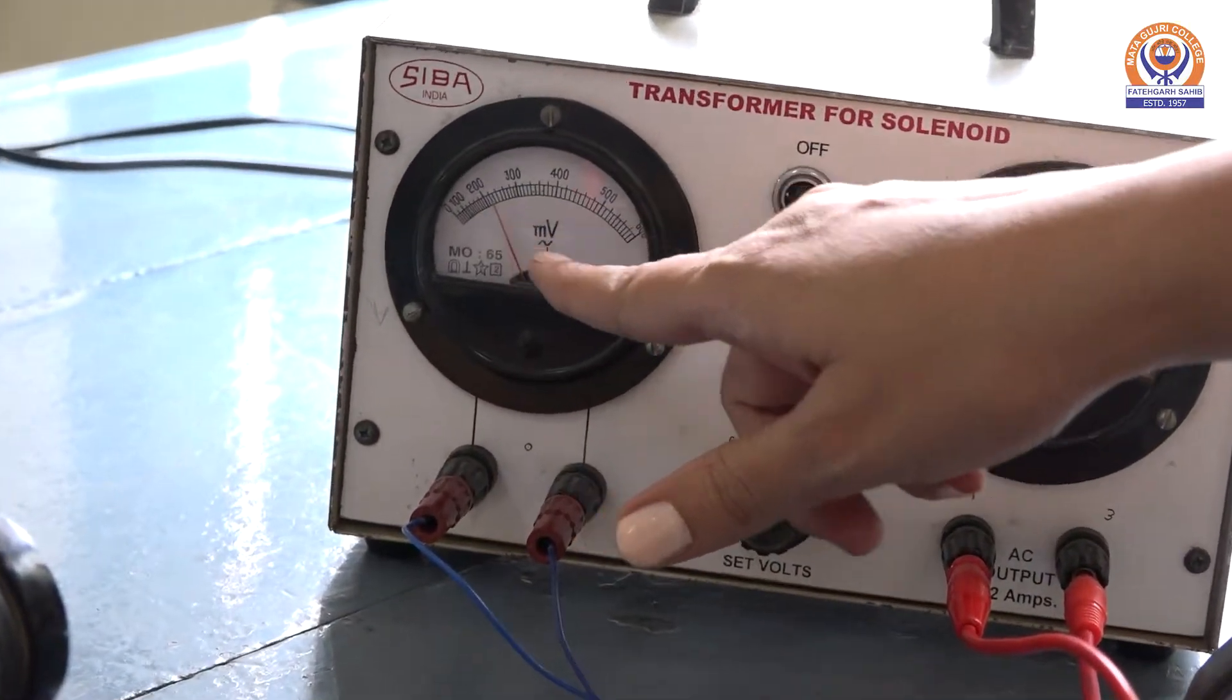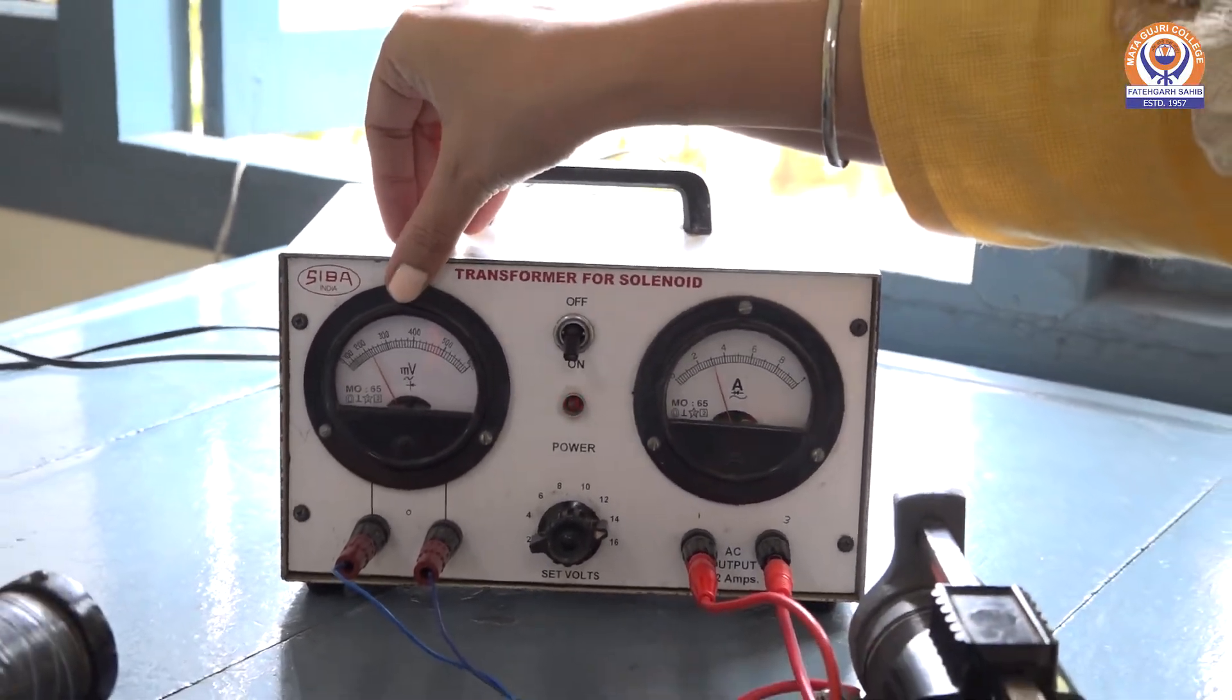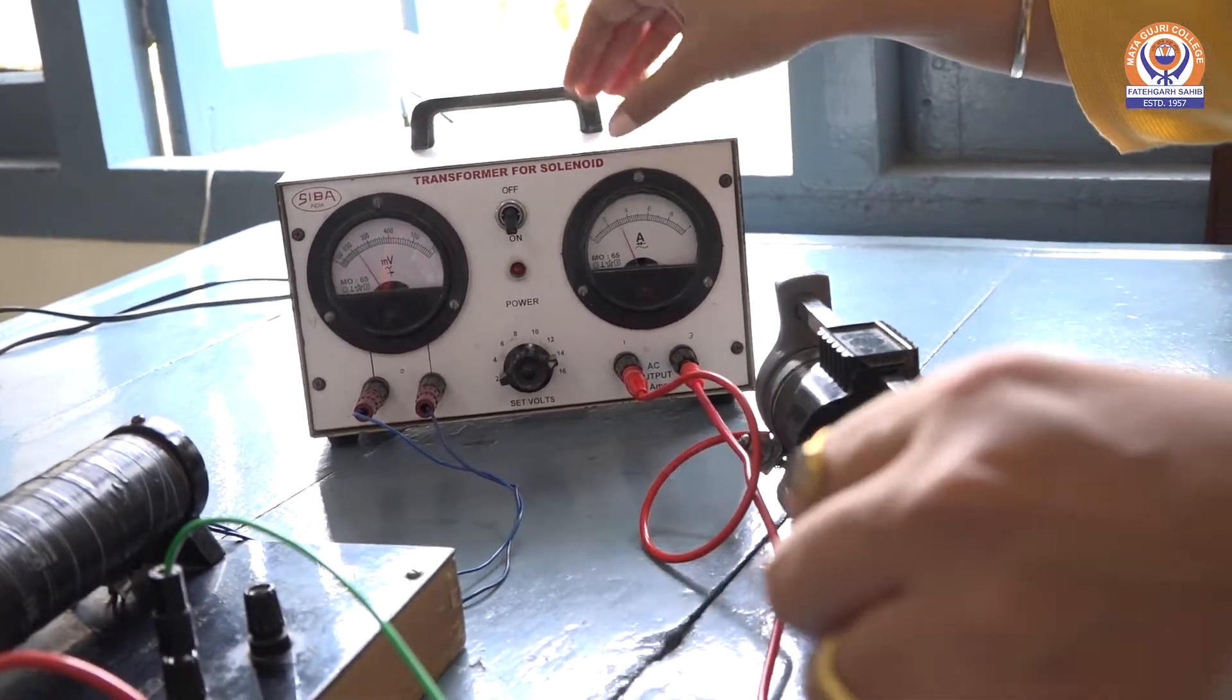We will note the value of E, that is millivolt, 200 millivolt, and value of this current, 0.3.